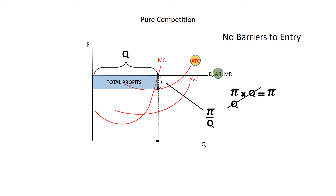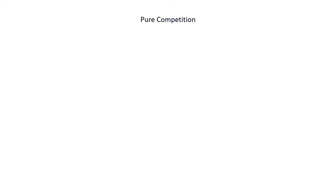Now let's return to the question: is this firm in equilibrium, or will the situation soon be changing? Given the fact that there are no barriers to entry, this situation will soon be changing. Potential entrepreneurs are eager to bring resources into this industry to take advantage of these economic profits. Note the use of the term economic profits — it's important at this point to distinguish economic profits from accounting profits.